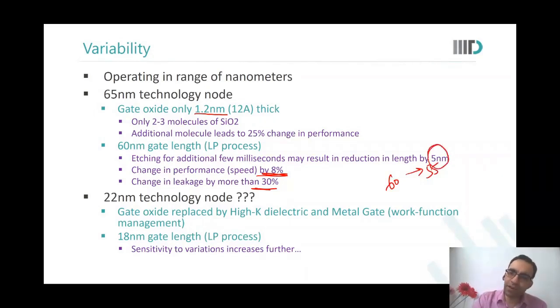Now let's say this 5 nanometer error I make in a 22 nanometer technology with 18 nanometer gate length. What happens now? Over here the error was less than 10 percent. What will be the error over here if I make a 5 nanometer error? It will be almost 30 percent.